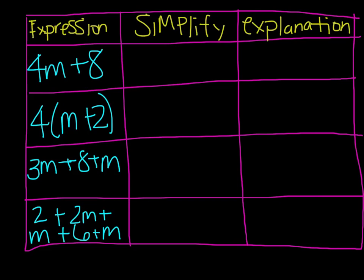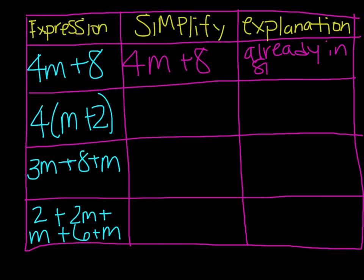This first expression, 4m plus 8 — is there a way to simplify it further, or is it already as simplified as it gets? It's actually already in simplest form. There are no parentheses, nothing else to worry about — it has the fewest terms possible. So 4m plus 8 is my simplified expression, and the explanation is 'already in simplest form.' Don't use that every time — only when it truly applies.